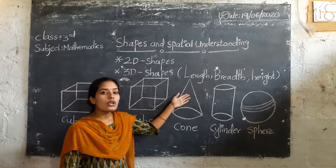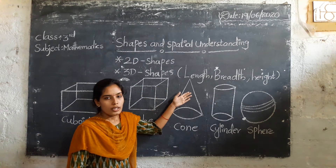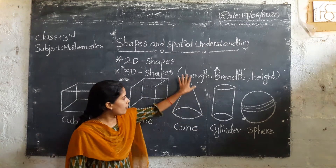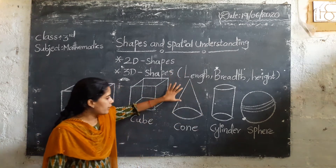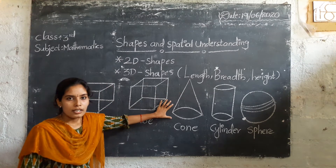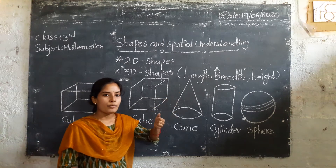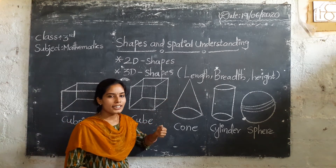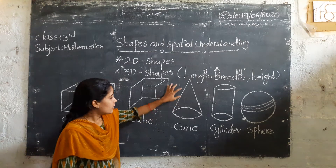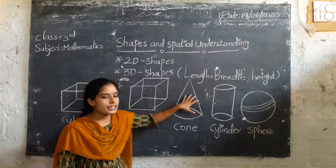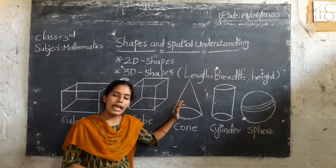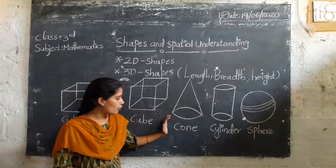And the next one is cone. Where we are observing this type of shape? Cone ice cream — do you like it? Yes. And the next one, butter container. These are the examples of cone.